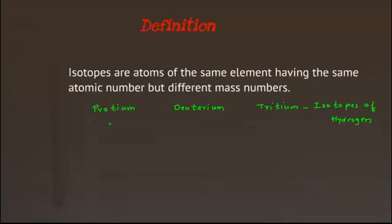Proteum is denoted by H1 1, deuterium is denoted by H2 1, and tritium is denoted by H3 1. If you look at these isotopes, you can see one is common in all the three isotopes. It is nothing but the atomic number. So the atomic number of these three isotopes are same. Hence, according to the definition, isotopes possess same atomic number.